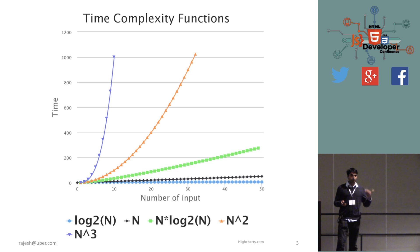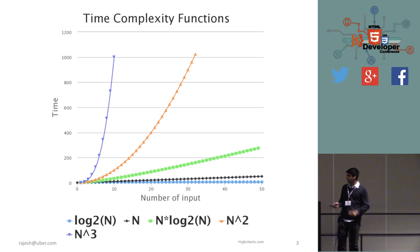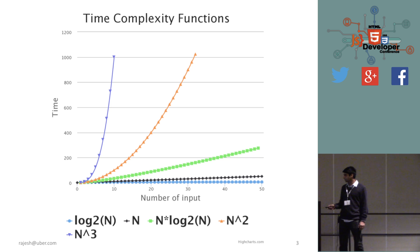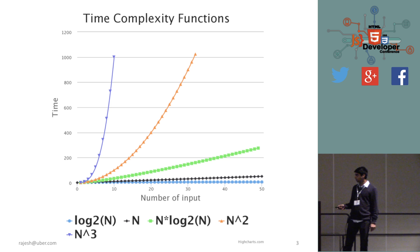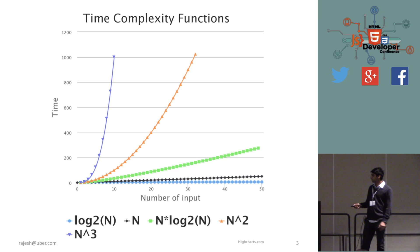One of the important things I want you to take away from this talk is this particular slide. I have plotted five functions. The first is log n, which is the bottom-most line on the x-axis in blue. As you can see, it's increasing at a really slow rate.